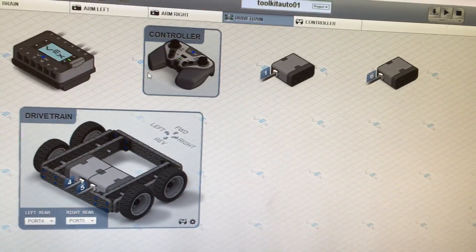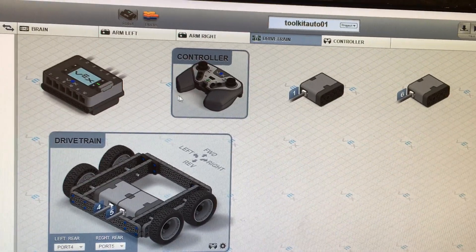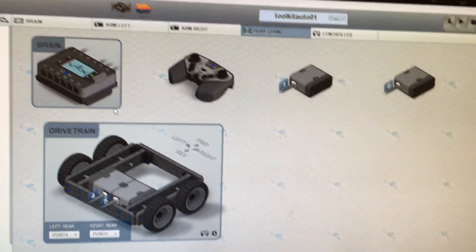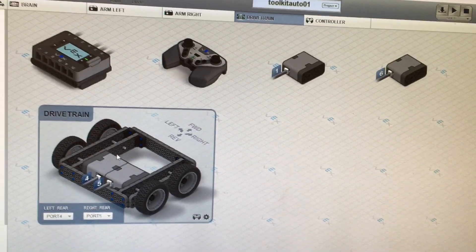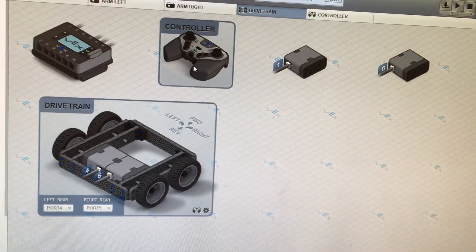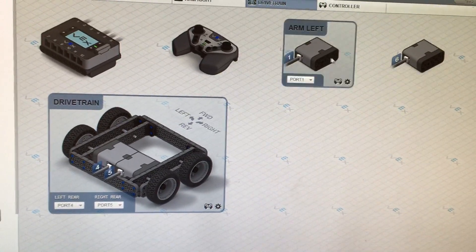I apologize for the handheld video, but this is the best I could do on short notice. Okay, what we did here is we've got our robot in here. We use the drivetrain. We've got our controller, and we've got two arm motors.